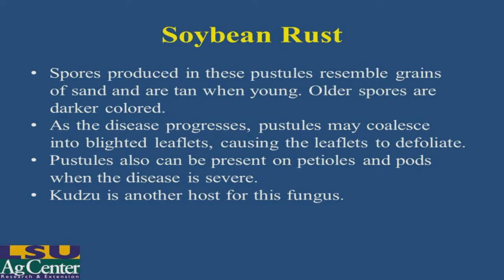Spores are produced in these pustules and are released — initially they look like small grains of sand, sort of tan in color, and then as they become older, they are darker in color. As the disease progresses, the pustules can coalesce and cause blighted areas on the leaflets, causing the leaflets to defoliate if the incidence is high enough. Pustules can also be present on the petioles and pods where the disease is severe, but this is a rare symptom.